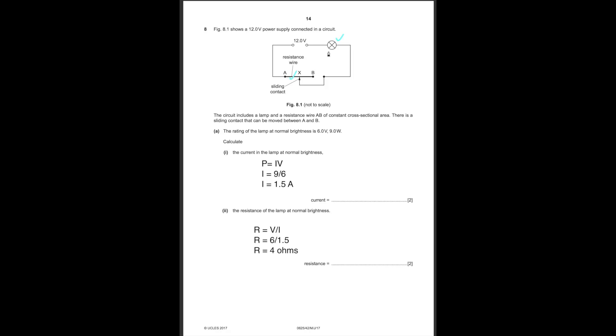Since the entire resistance is 8 ohms and you subtract the lamp's resistance, you get 4 ohms for AX. AB is 1 meter with resistance 5 ohms. AX is a portion of AB with resistance 4 ohms. Using a ratio — 1 meter is to 5 ohms as AX is to 4 ohms — cross-multiply: AX equals 4 times 1 divided by 5 equals 0.8 meters. So the length AX is 0.8 meters.